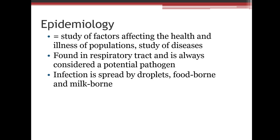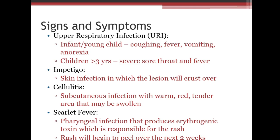Streptococcus is found in the respiratory tract and is always considered a pathogen. It's usually spread by droplets, food, or milk. Signs and symptoms in young children include coughing, fever, and vomiting. In children over three, we see sore throat and fever. Skin infections include impetigo and cellulitis, where the skin becomes warm, red, and tender. Scarlet fever is a pharyngeal infection producing erythrogenic toxin that causes a rash, which begins to peel over the next two weeks.